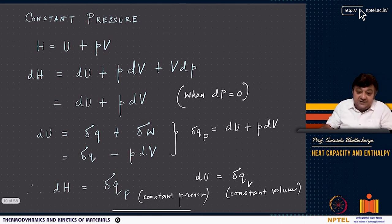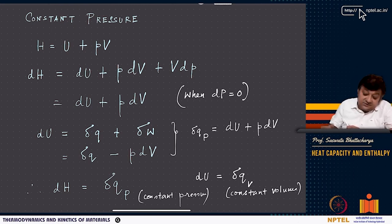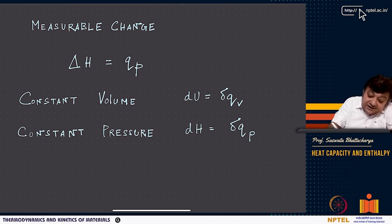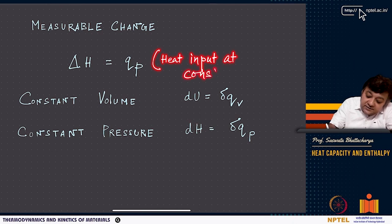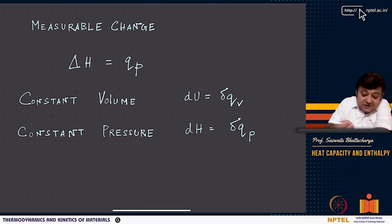Delta h is a measurable change — it equals hf minus hi. Note that d of z is a differential (infinitesimal change), while delta z is a measurable change equal to z_f minus z_i. At constant volume we use du, and at constant pressure we use dh. Integrating gives delta h = delta u + p * delta v.